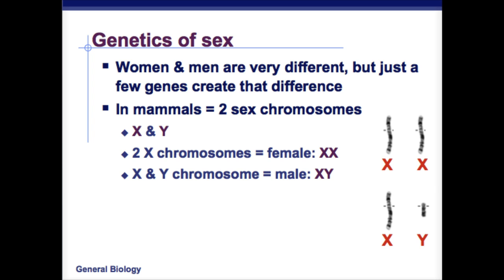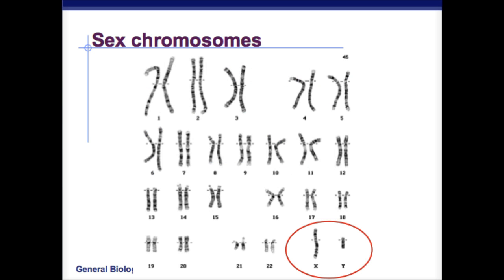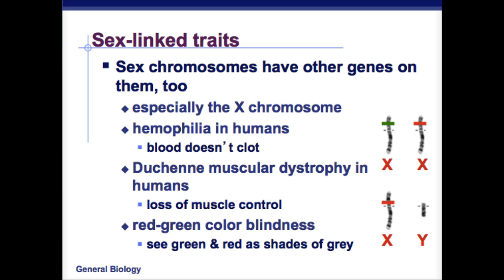While you can have co-dominance and incomplete dominance, there are also traits that are linked to your sex genes. So depending on if you're male or female may determine whether a trait is expressed or not. In humans, we have 23 pairs, and our 23rd pair is your X and your Y. The X chromosome can carry things like hemophilia, which is when your blood doesn't clot, muscular dystrophy, which is loss of muscle control, and red-green color blindness.